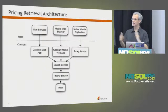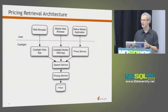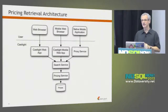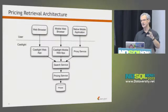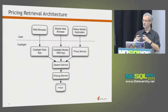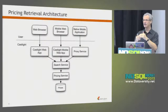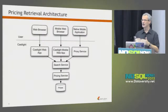Our system has many moving pieces, but just for the pricing retrieval aspect: users come in through a web browser, mobile web browser, or native mobile app. It all funnels down through a Ruby on Rails app and single-page JavaScript Angular apps, then into our service layer written in Java. The pricing service is the layer that interfaces down to the prices. One nice thing: I started with MySQL and was able to transition to MongoDB just in that layer without affecting anything above it.